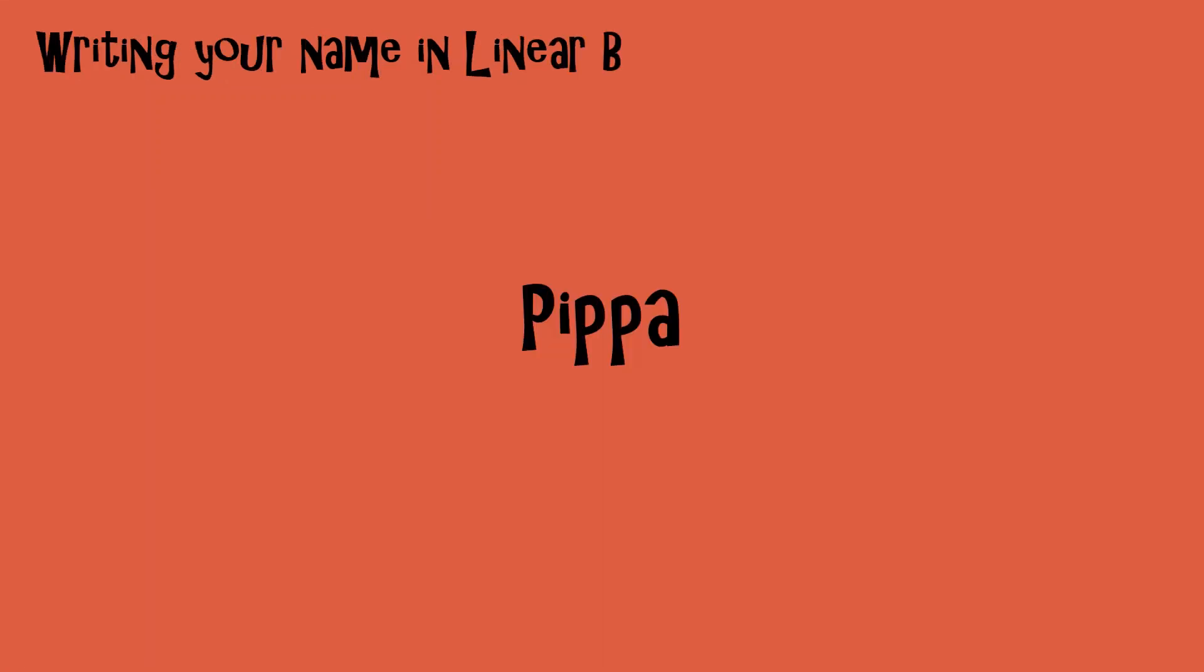Now it's time to try writing your name in Linear B. Let's start with my name. My name is Pippa, which is quite easy to write in Linear B. Linear B is what we call a syllabic script. That means that every sign represents a whole syllable. So the next thing you need to do is to divide your name into syllables. Mine has two, PI and PA.